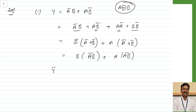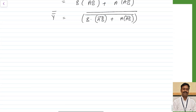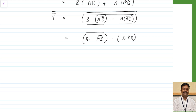So this I can write as B into AB bar plus A into AB bar. Now I am taking Y double bar — that is, I take this expression and apply bar bar. To complement this, as we have seen, a quantity of the form A plus B whole bar becomes A bar dot B bar. So this becomes B into AB bar whole bar, dot A into AB bar whole bar, and overall there is an outer bar. So this simplification is complete.